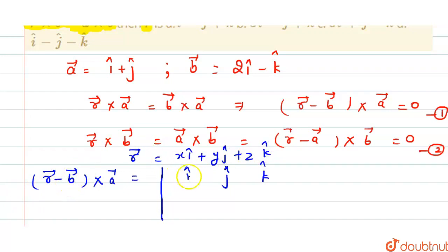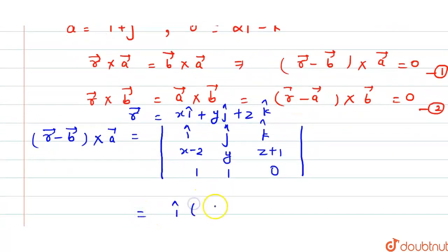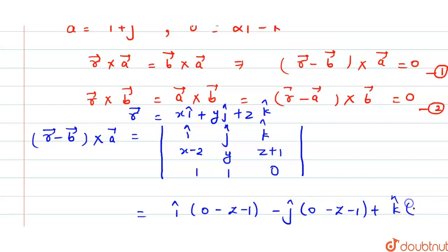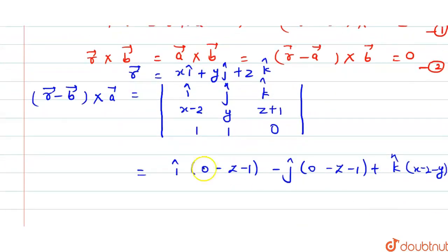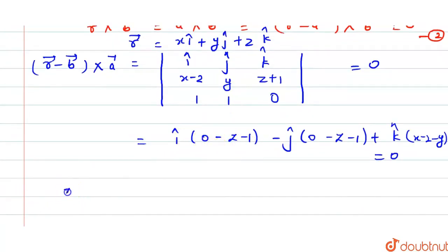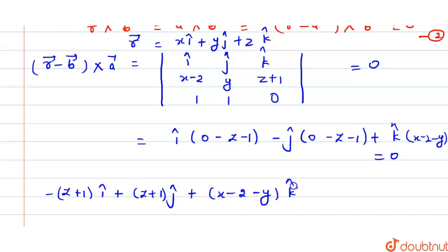For equation 1, the components of r minus b will be: x minus 2, y minus 0 which is y, and z minus (minus 1) which is z plus 1. The components of a are 1, 1, 0. Expanding the determinant: i cap times (0 minus z minus 1), minus j cap times (0 minus z minus 1), plus k cap times (x minus 2 minus y). This equals 0.